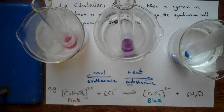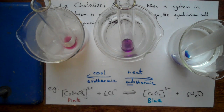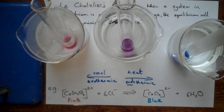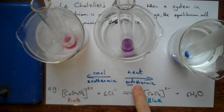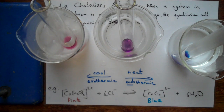We can use Le Châtelier's principle in more than one way. If we know whether a reaction is exo- or endothermic, we can predict which way it will go. If we don't, we can do the experiment and see which way it goes, and that will tell us whether it's exo- or endothermic. This idea applies to all reversible reactions: heat any reversible reaction up and it will shift in the endothermic direction; cool any reversible reaction down and it always goes in the exothermic direction. That's Le Châtelier's principle in a few simple experiments.